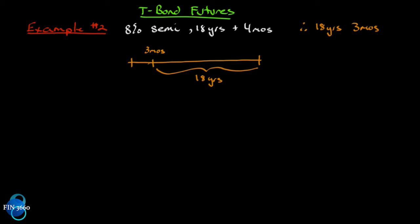Let's do an eight percent semi with 18 years and four months left. Rounding down to the nearest three-month period gives us an 18-year three-month bond — not an even number of six-month periods. So we use a two-step procedure. First, take just the clean 18-year period and find the present value of the bond as of three months from now, then discount it backwards three months.